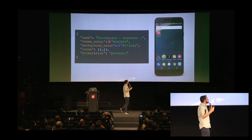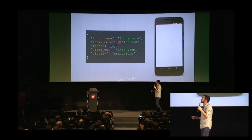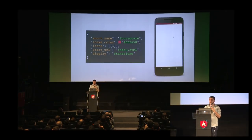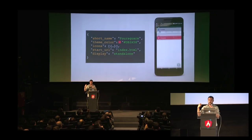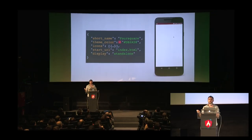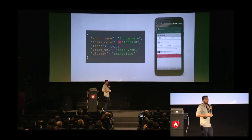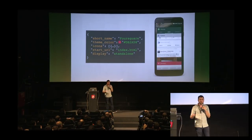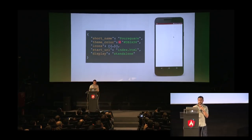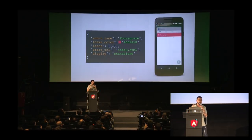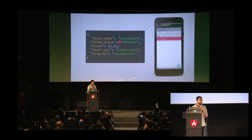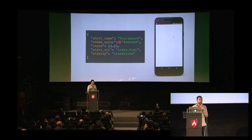The manifest is like a configuration file that tells the browser more about your application and allows it to open the app while hiding all the browser chrome — no Chrome or Firefox visible anymore. With display standalone, the web app looks exactly like a native application. You can also specify a start URL, icons, and theme color. That's the first step to building a progressive web app.